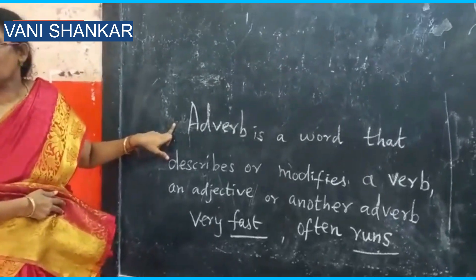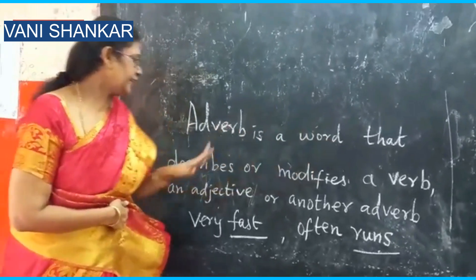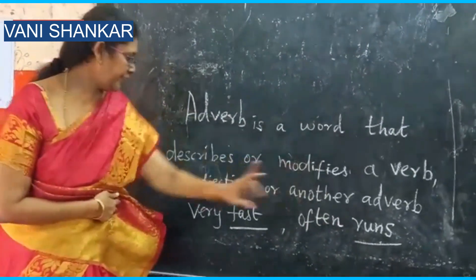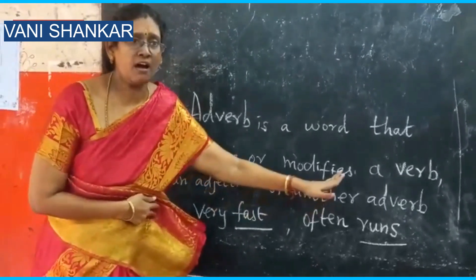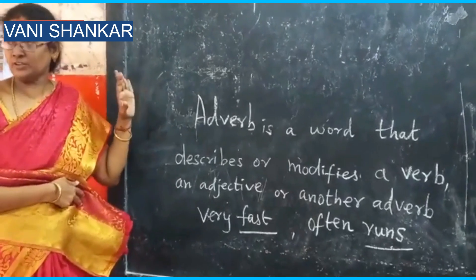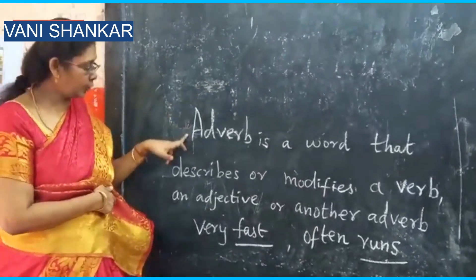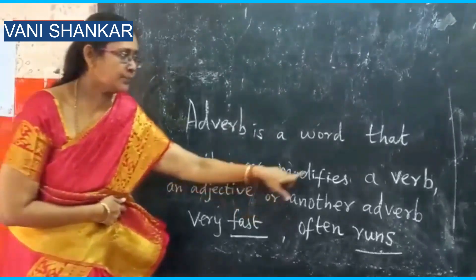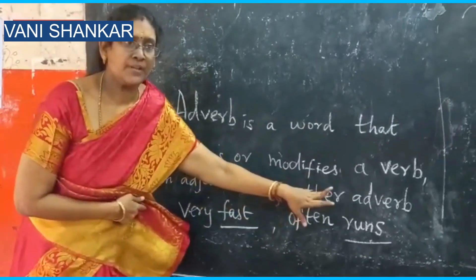Now we have adverb. An adverb is a word that describes or modifies a verb, an adjective, or another adverb. As we saw with adjective — adjective describes a noun — here, adverb describes or modifies a verb, an adjective, or another adverb.